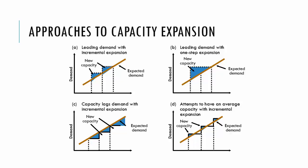We can also lag demand with incremental capacity expansion. This is when you wait until customers are complaining and then you add little by little to the capacity. And the final option is to try to average capacity with incremental expansion. While this seems like a good idea, being able to execute it operationally is quite difficult.